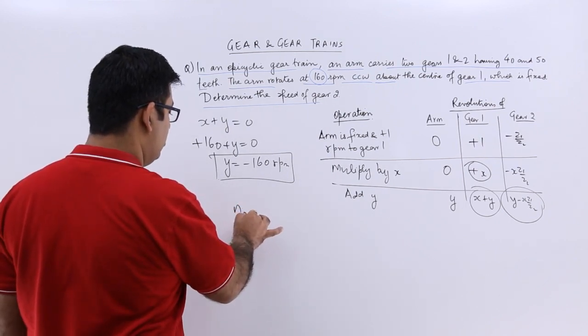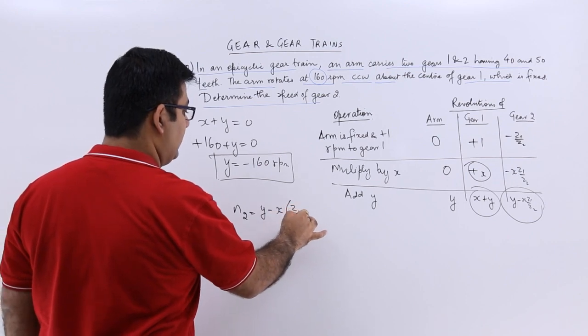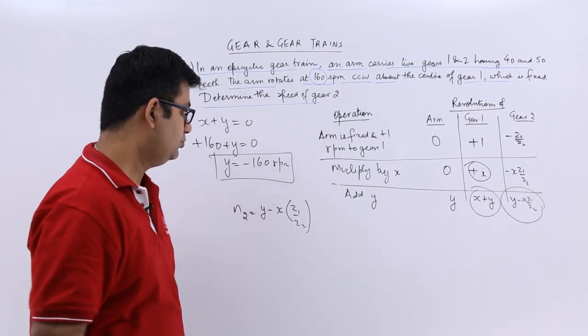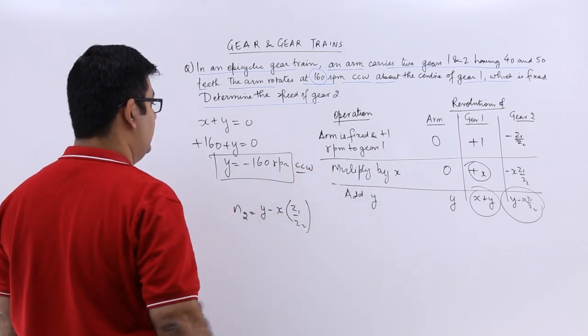So n2 is y minus x into z1 by z2. And this is a counterclockwise direction for arm.